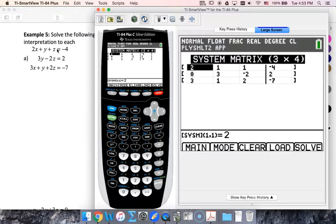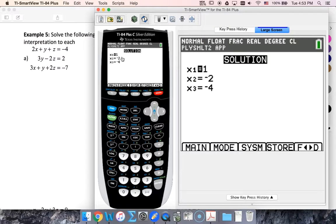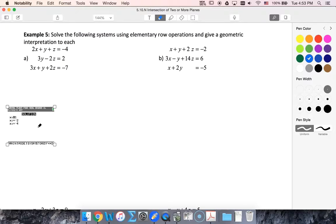And I put in all my coefficients, and then my constants on the right. So negative 4, 2, negative 7, and then 2, 1, 1, 0 x's, 3, negative 2, 3, 1, 2. And then if I hit solve, I can see that these planes intersect at a single point.